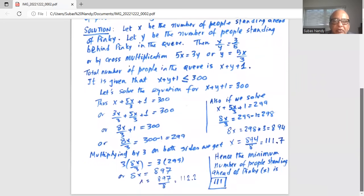Now also if we solve for x plus 5x divided by 3 plus 1 less than 300 equals 299, so 8x by 3 equals 298 and 8x is equal to 298 times 3. So multiply by 3 on both sides to get 8x equals 894. Hence x is 894 divided by 8 is equal to 111.75.